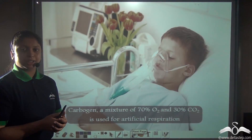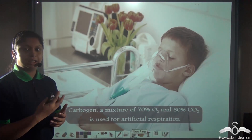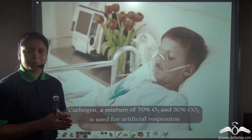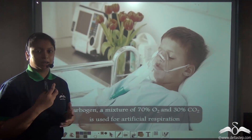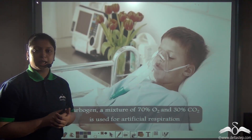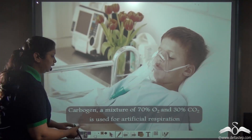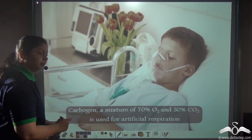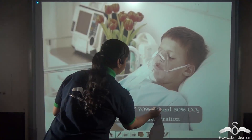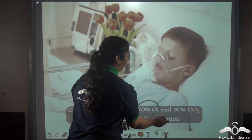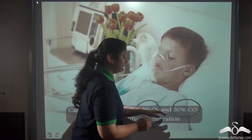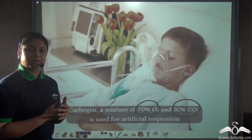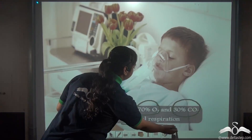Carbon dioxide is an excretory gas — when we exhale, we breathe out air rich in carbon dioxide. However, in critical conditions in the hospital, carbon dioxide is also used for artificial respiration. Carbon dioxide is mixed with oxygen in a specific proportion known as carbogen, which contains 70% oxygen and 30% carbon dioxide. In this proportion, when given to critical patients with respiratory problems, it helps them survive.